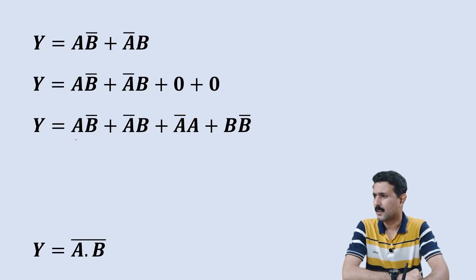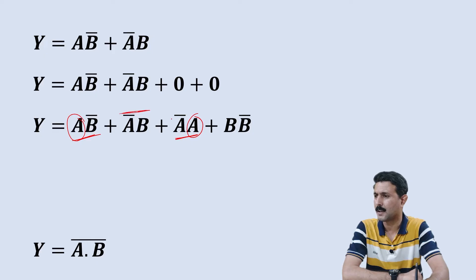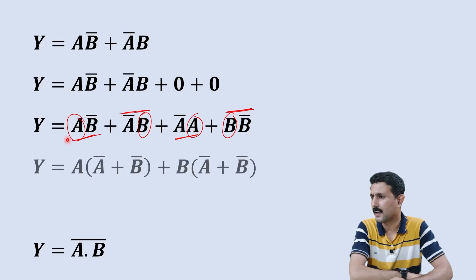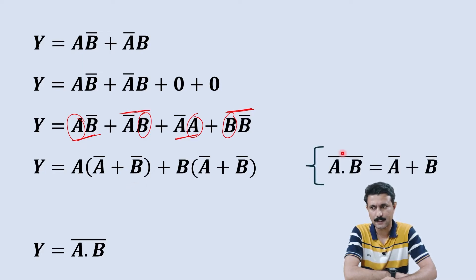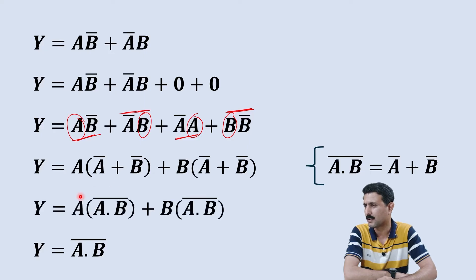In the term A·B̅ and A̅·A, A is common in both. And in the term A̅·B and B·B̅, B is common in both. So if I take A common from the first pair and B common from the second pair, I get a new equation. Now we have a chance to go closer to the NAND form using De Morgan's theorem. De Morgan's theorem states that (A·B)‾ = A̅ + B̅. Here we have A̅ + B̅, so we can replace it with (A·B)‾. Modifying the equation accordingly, we are now one step closer to the NAND form — we have obtained A·B whole bar.